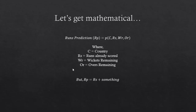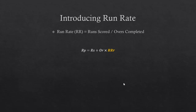We already know that runs predicted equals runs scored plus something. We don't need to predict everything — if we can predict that 'something' alone, that's enough. The total run would be, say, 75 plus that unknown value. This unknown is what we need to find. So rather than a function predicting total runs, we want a function that predicts that remaining contribution.